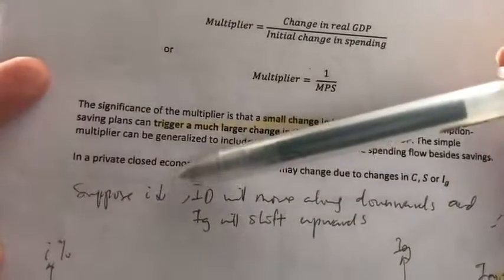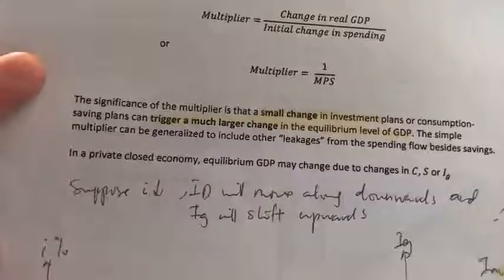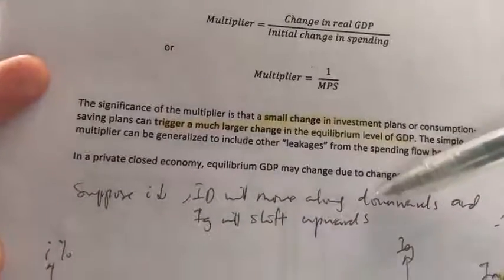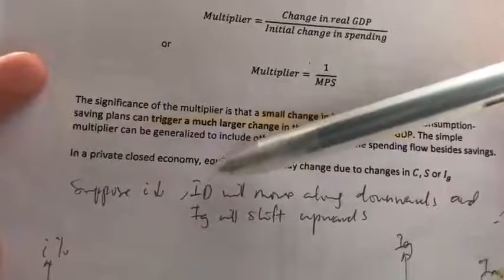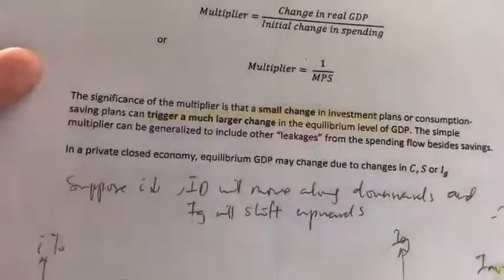Right, now suppose there's a fall in real interest rate. What happens is it becomes cheaper for companies and firms to borrow. Therefore, there will be a downward movement along the ID or investment demand curve and there will be an upward shift in the investment schedule.